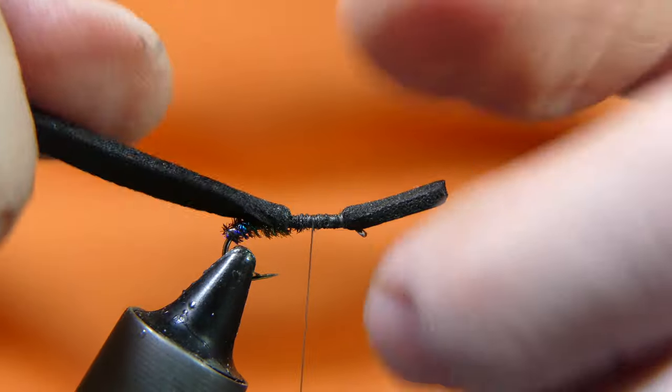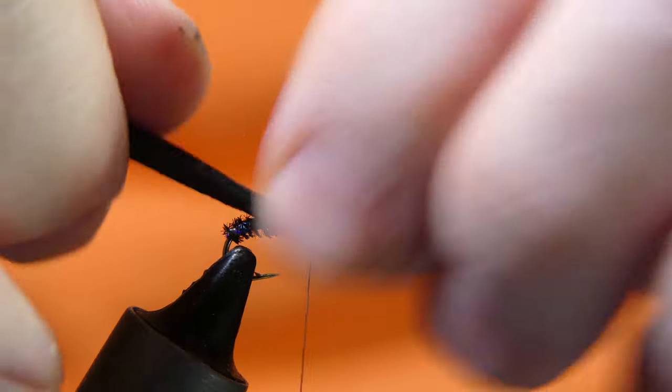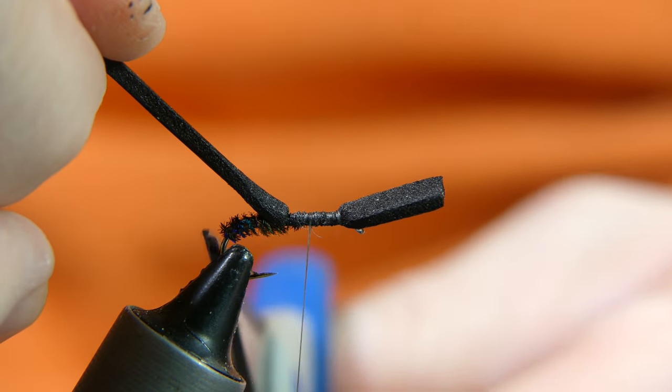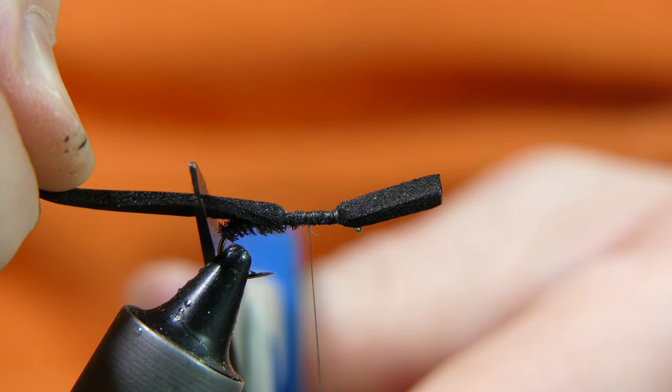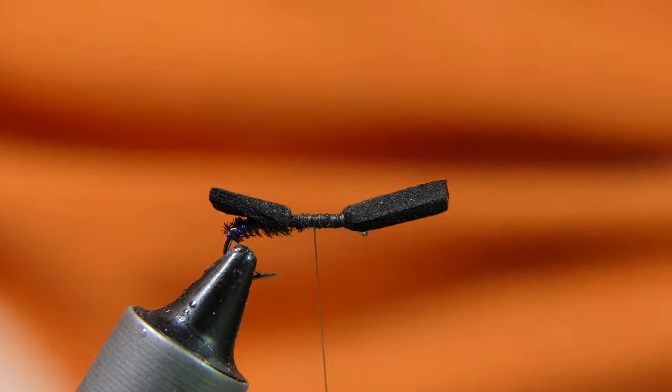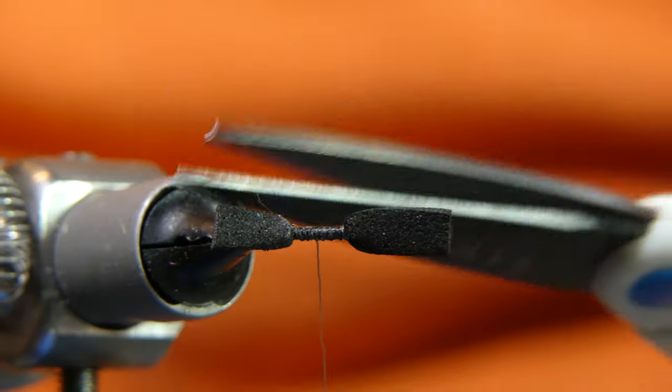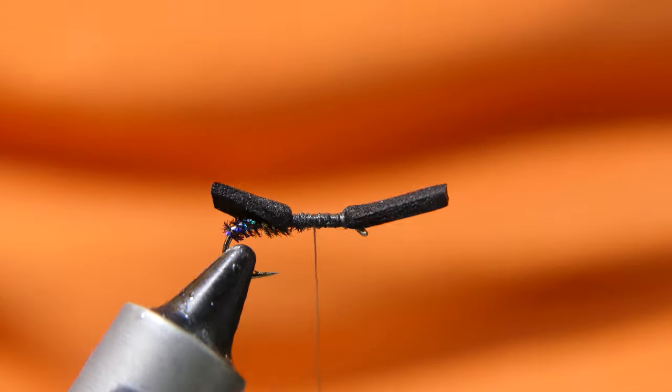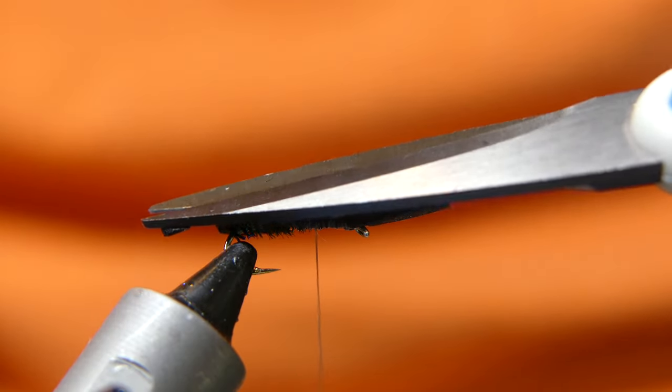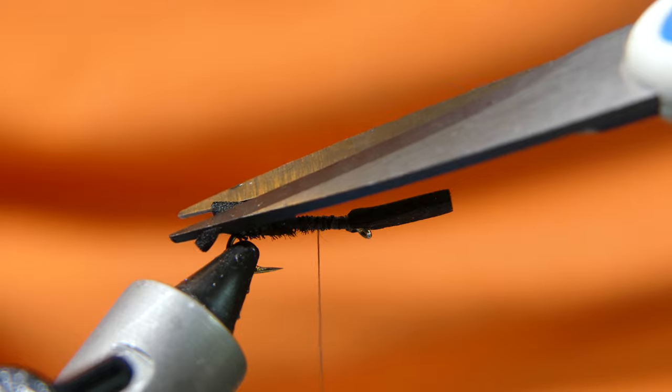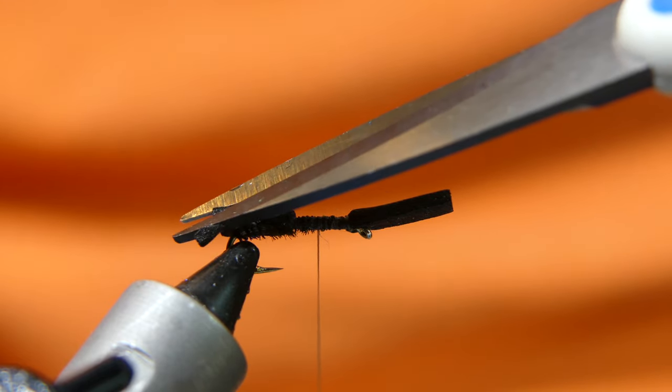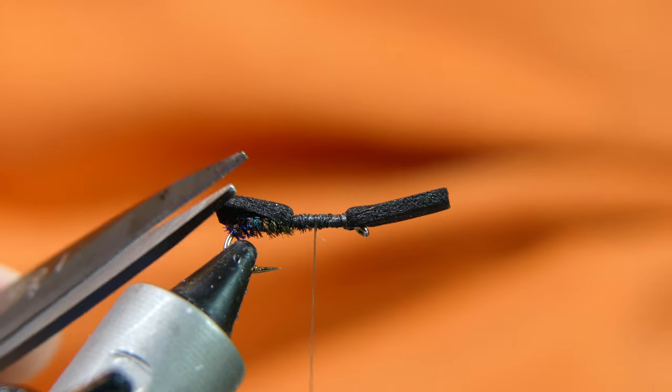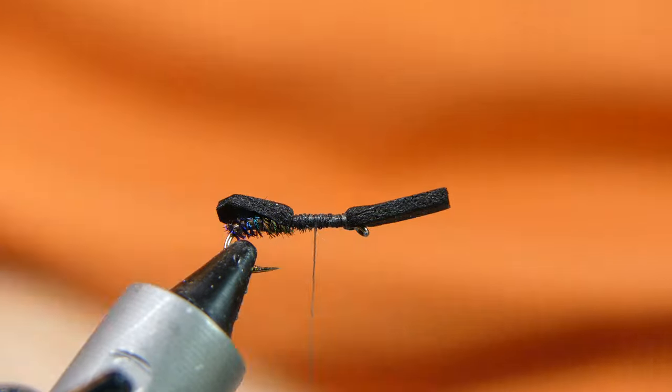Take your scissors and cut away just right past the bend of the hook, the black foam. I like to trim off the hard ends here, the little sharp ends, give it a little more rounded look, like that.